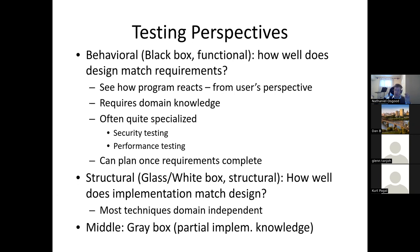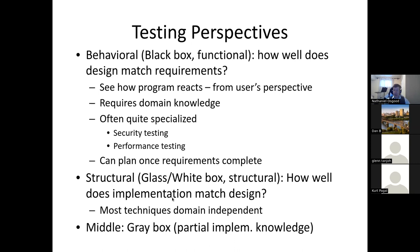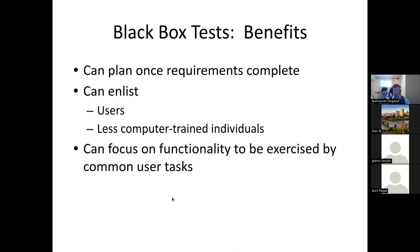By contrast, a structural — or so-called white box, or glass box, which is a better term because it's transparent and lets you see through to the implementation — we're asking to what degree does that implementation really match the design, and we're using information from the implementation to inform our test cases. We're trying to assess not just have we built the right system according to the requirements, but have we built the system right. Black box tests have some advantages: they can be planned once the requirements are complete. They don't require code to be written to see through to the implementation, and you can focus on functionality driven by and of importance to the user.